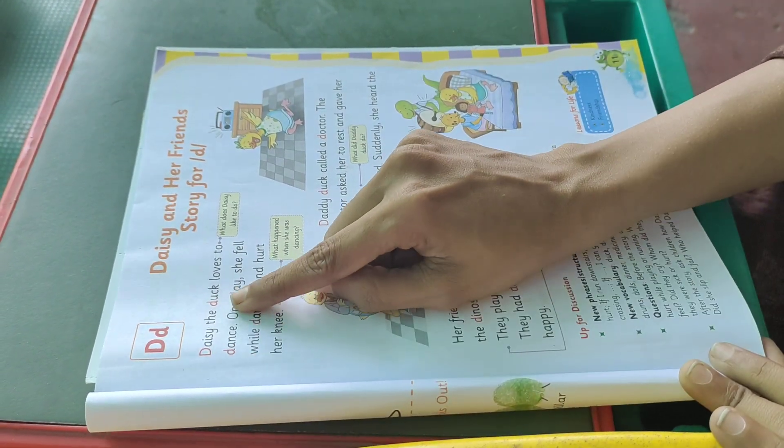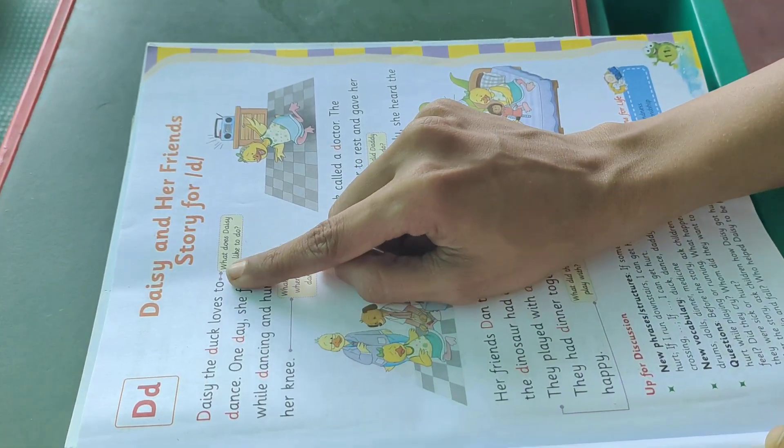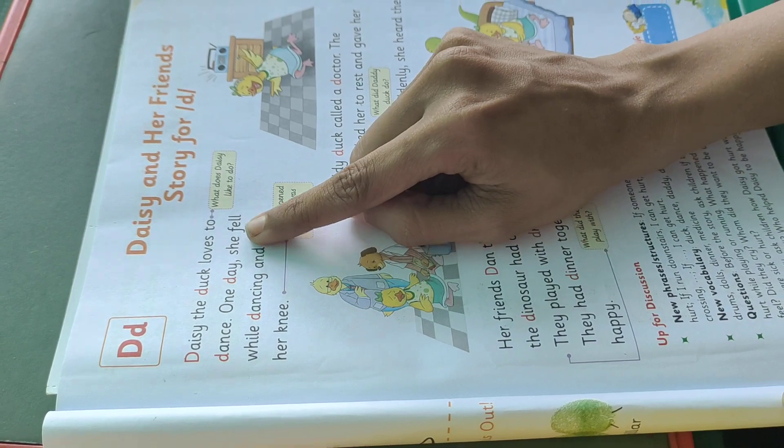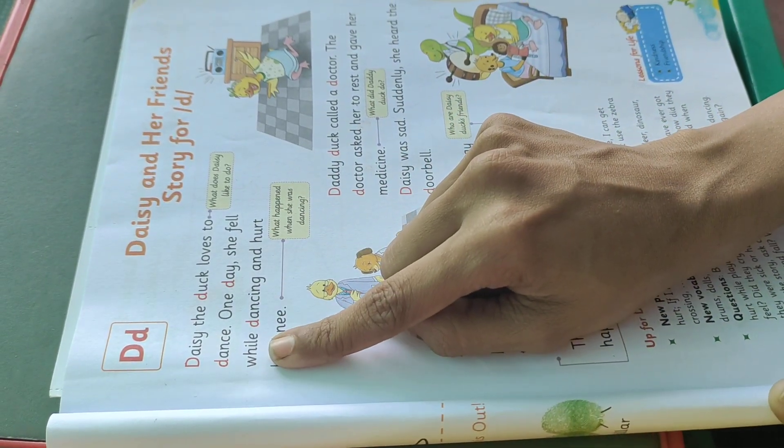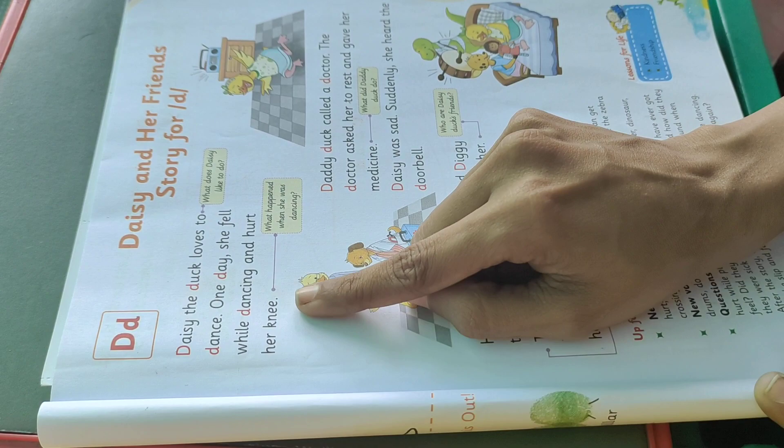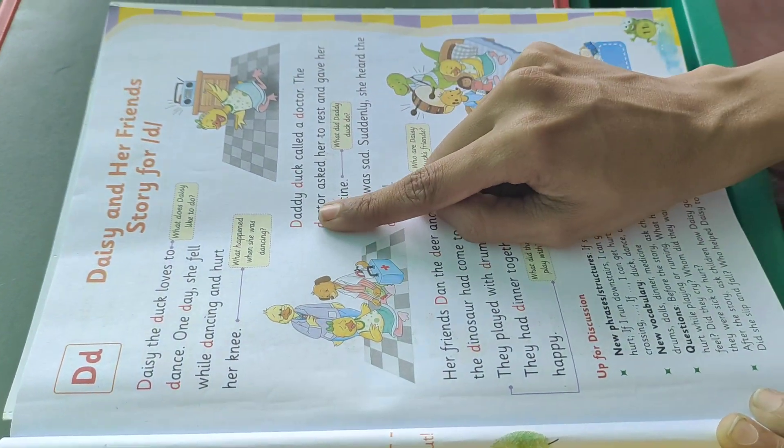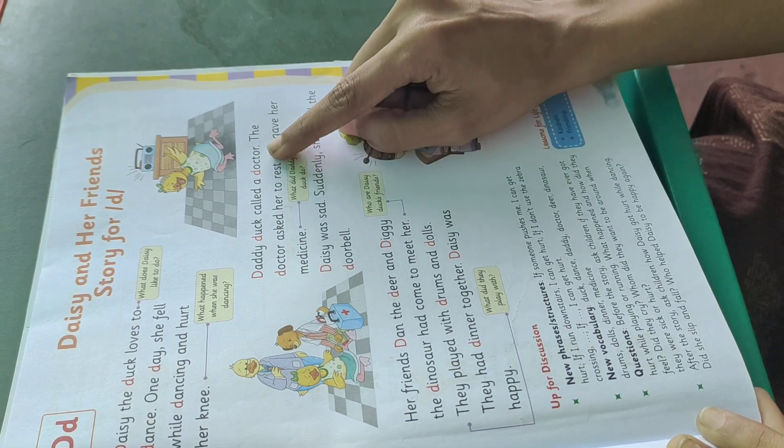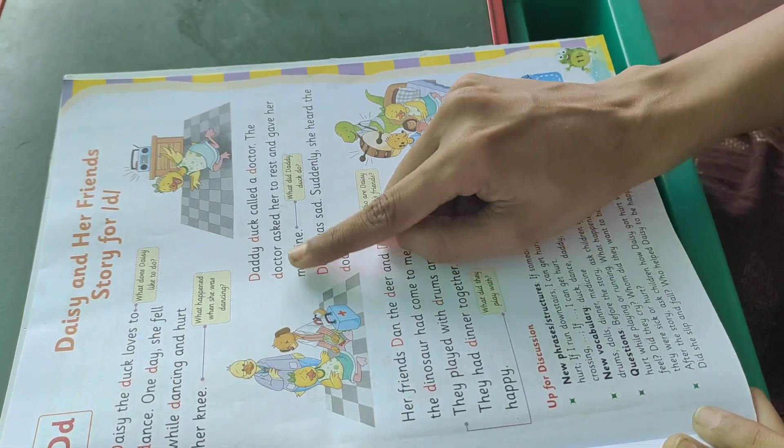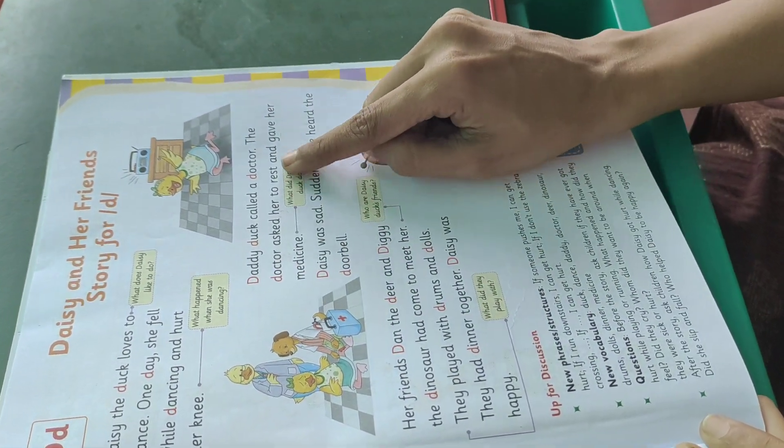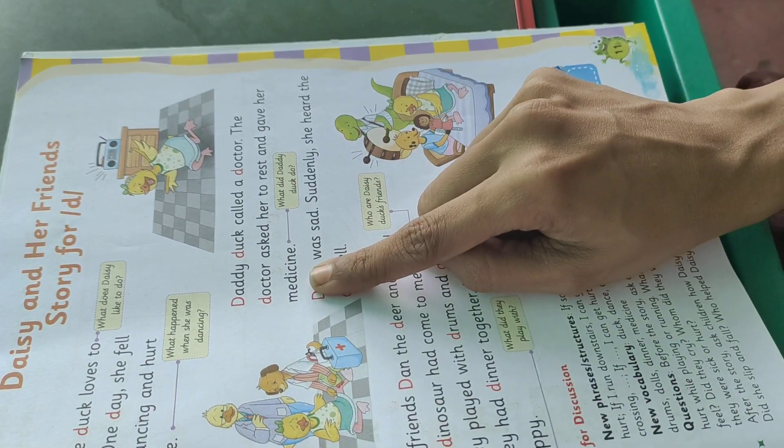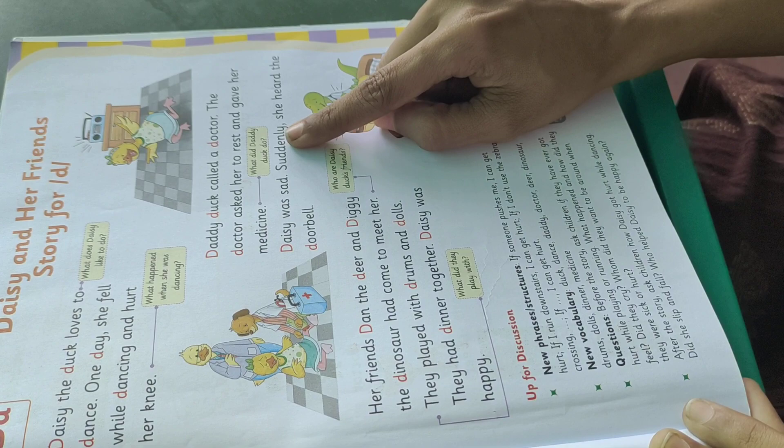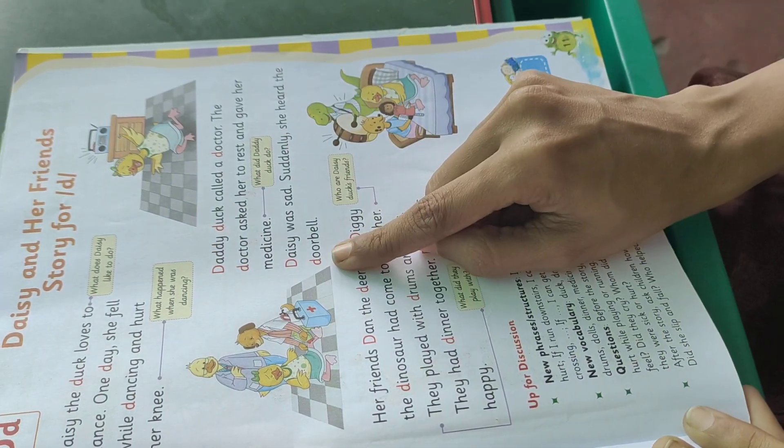Da da da da da duck loves to da da dance. One da da day, she fell while da da dancing and hurt her knee. Da da daddy, da da duck called a da da doctor. Da da doctor asked her to rest and gave her medicine. Da da da da da was sad. Suddenly, she heard the da da doorbell.